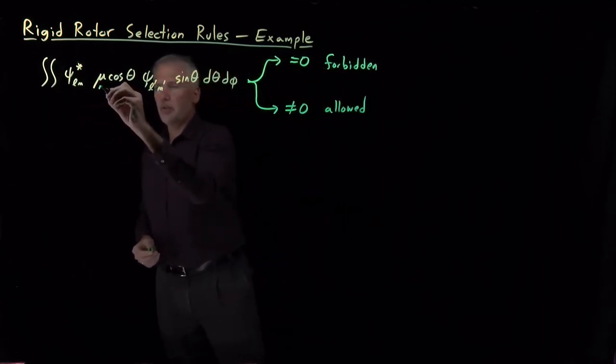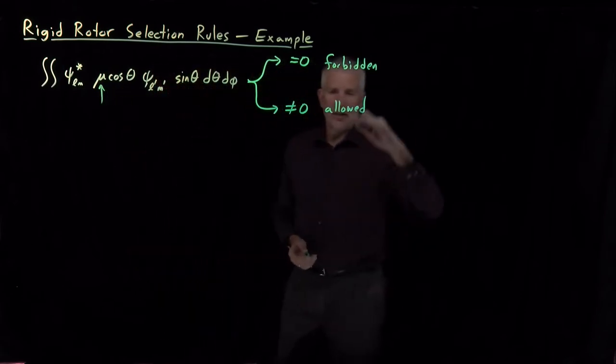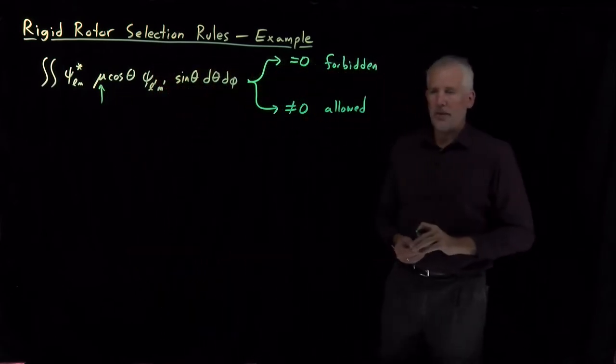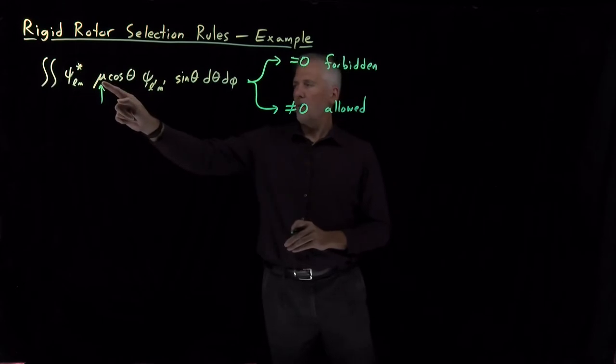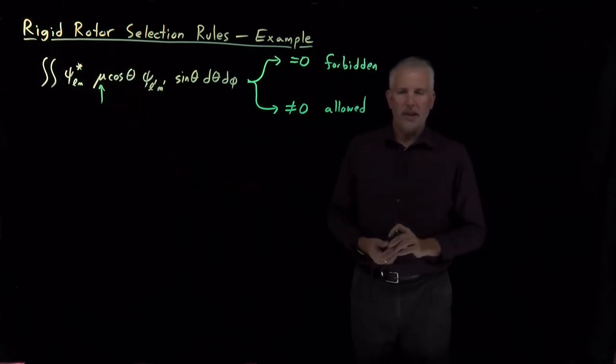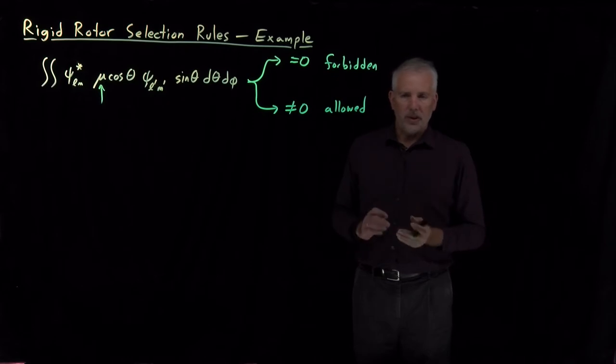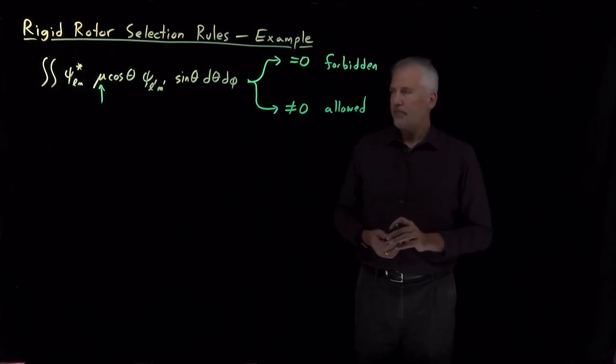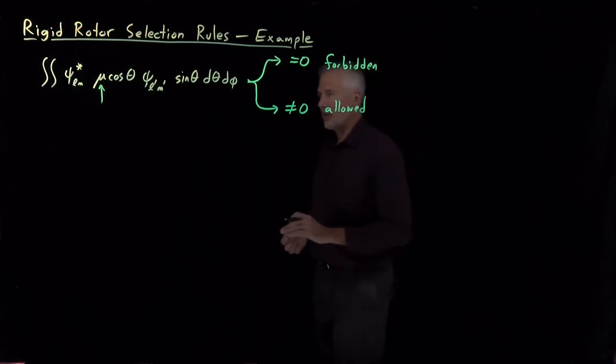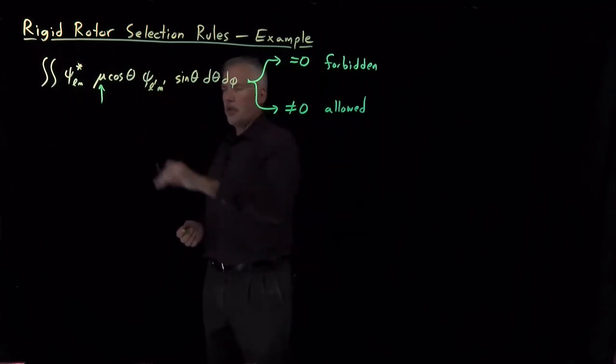We've already seen the gross selection rule. One way to make this integral zero, a forbidden transition, would be any one for a molecule with a dipole moment of zero. That's certainly one way to make the integral zero. That's the gross selection rule. But now we're more interested in more specific selection rules about what changes in L and what changes in M are allowed. And we'll be able to determine some rules that determine those changes.